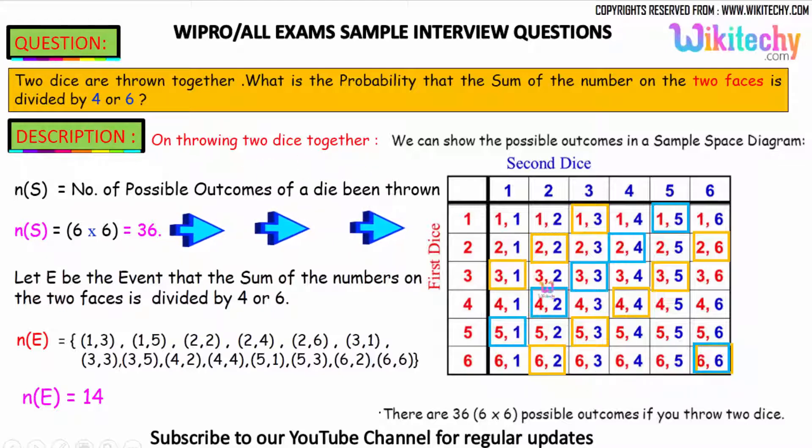For divisibility by 6: (1,5) adds to 6, (2,4) adds to 6, (3,3) adds to 6, (4,2) adds to 6, (5,1) adds to 6, and (6,6) adds to 12. These sums are divisible by 6.